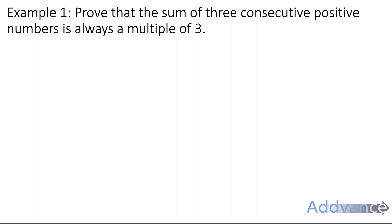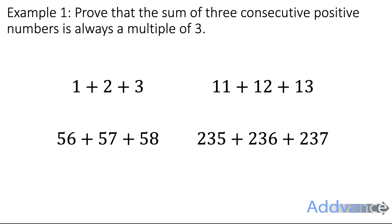Let's start off with the first example. Prove that the sum of three consecutive positive numbers is always a multiple of 3. So three consecutive positive numbers would look like these examples: 1 plus 2 plus 3, 11 plus 12 plus 13. Consecutive just means next to each other. So all these sets of three numbers are all numbers next to each other on the number line.